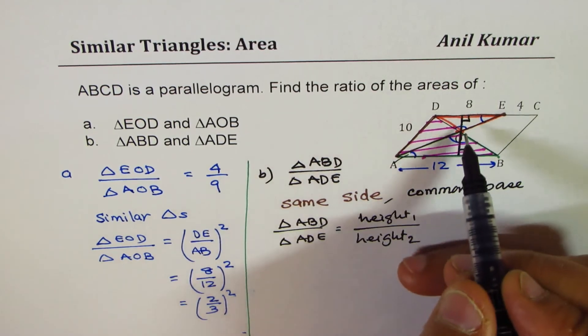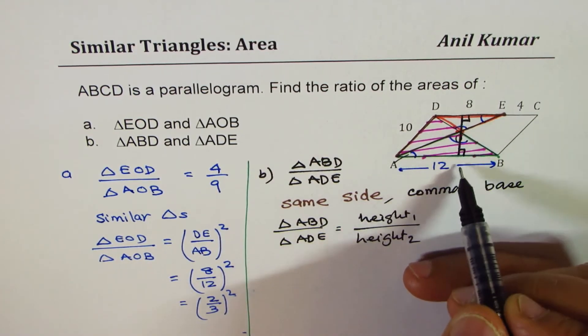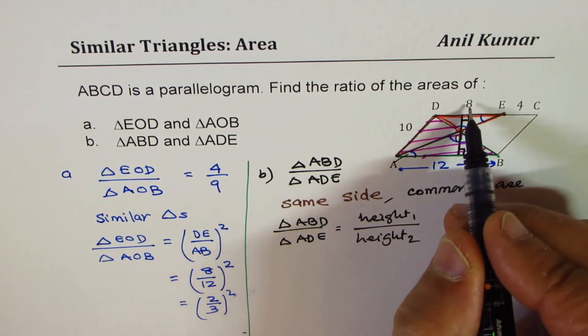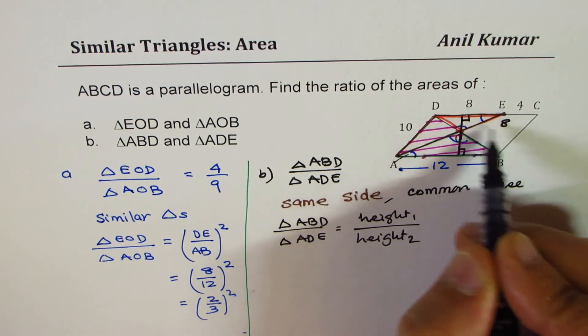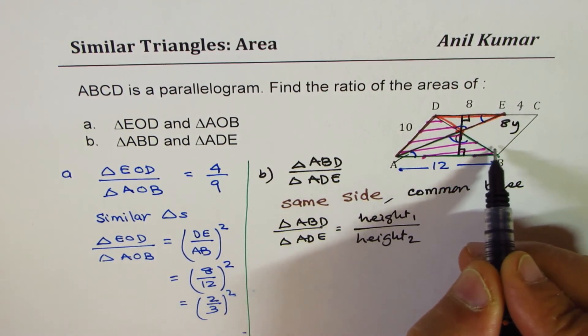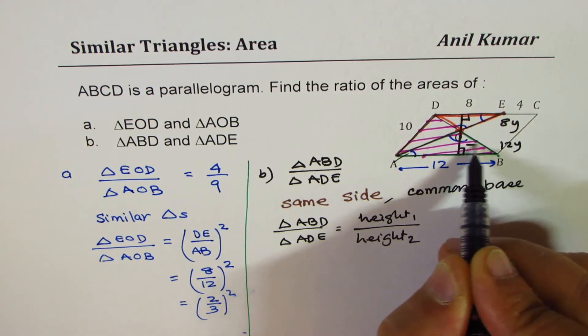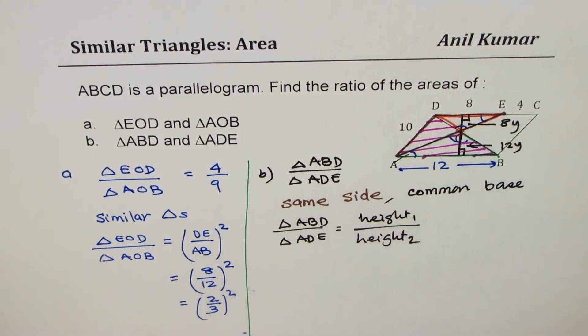we know clearly that the smaller and the bigger, the ratio is 8y, let's say this is 8y, then that is 12y. Is it okay? So this is 12y, so this is, that is the ratio, correct?